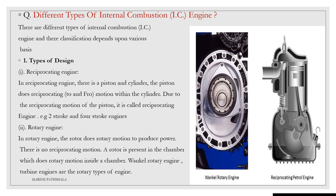The interviewer may ask you about the different types of internal combustion engine. There are different types and their classification depends upon various phases. The first is the type of design. They are of two types: reciprocating engine and rotary engine. In the reciprocating engine, there is a piston and a cylinder. The piston does reciprocating — that is, to and fro — motion within the cylinder. Examples are the two stroke and four stroke engine.